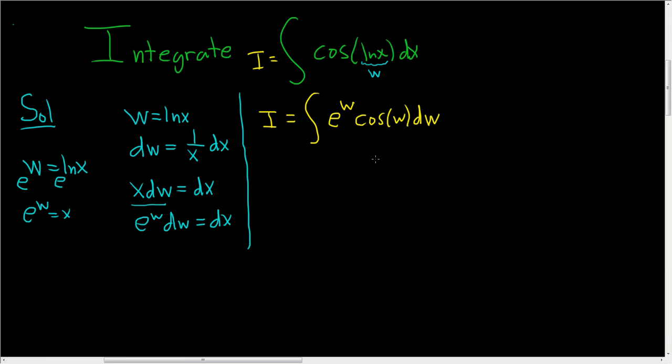And this is what I like to call a looper. These are the ones where you have to use parts two times. So let's go ahead and do that. So we'll pick our u and I'm going to pick u to be the trig function. And then dv is what's left over. So dv will be e to the w dw. Then du, well, the derivative of cosine is negative sine. So we get negative sine w dw. And then when we integrate dv, we get v equals e to the w.